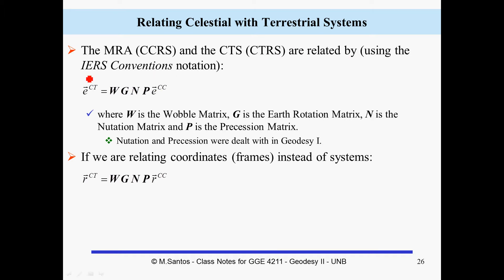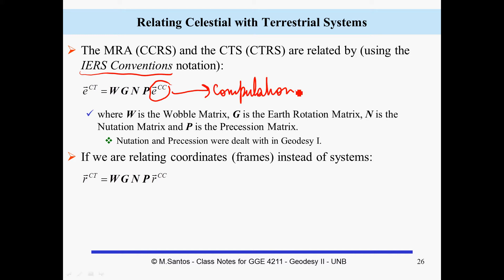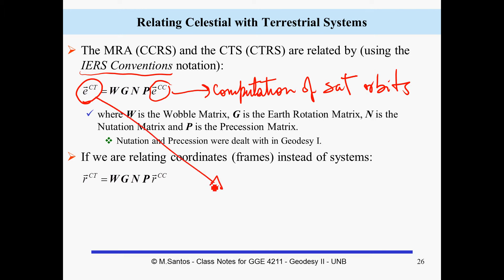Now we are using the IRS conventional notations. If we want to go from the conventional celestial system — which is used for the computation of satellite orbits — and we want to have the same satellite orbits expressed in the conventional terrestrial system, that is what we want them to be in the city system.